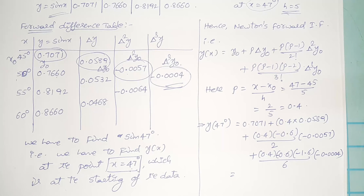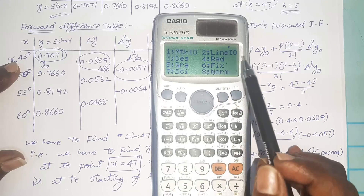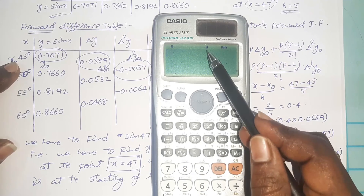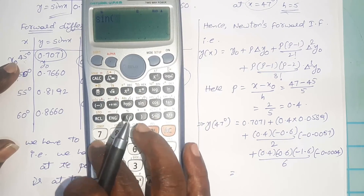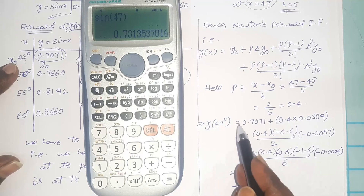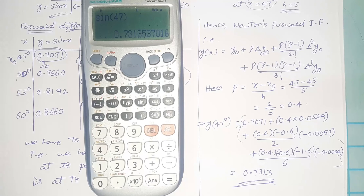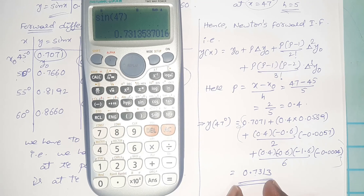I will give a useful technique: directly find sin 47° using a scientific calculator. Make sure your calculator is in degrees mode, since the given data is in degrees. Set it by pressing Shift → Mode → 3 (degrees). Verify: sin 45° = 0.7071. Then sin 47° = 0.7313.